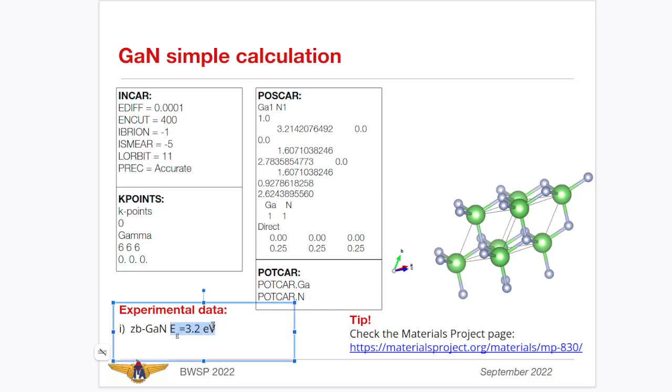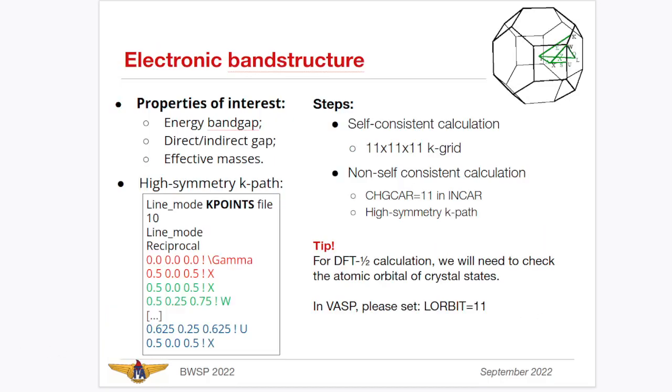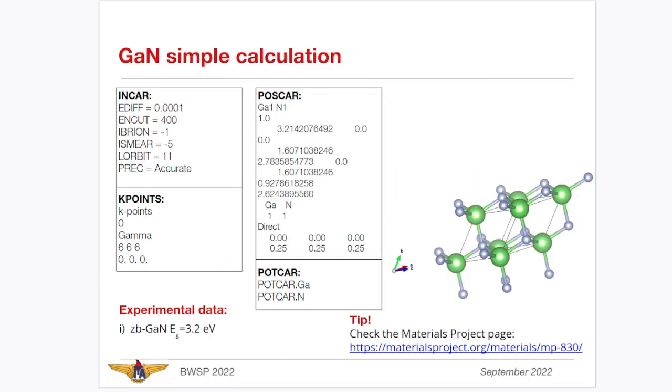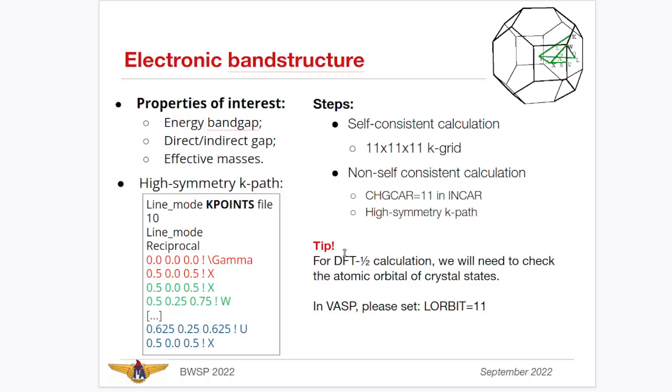This one should have an energy gap of 3.2 electron volts. We are going to calculate here the total energies and also the electronic band structure, which is a second step. First, perform a self-consistent DFT calculation. You calculate the electronic density and then use another k-points file with the k-path that you wish to calculate. I compacted here and then show you a little bit later all the input files and the calculations.